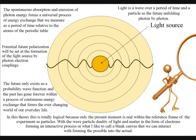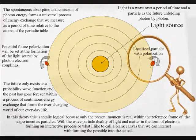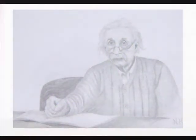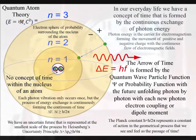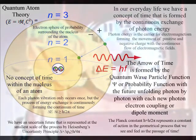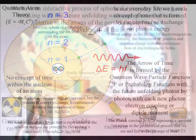This is totally logical because only the present moment is real within the reference frame of the experiment as a particle. With the wave-particle duality of light and matter in the form of electrons forming an interactive process, or what I like to call a blank canvas that we can interact with, forming the possible into the actual. The future only exists as a probability wave function and the past has gone forever within a process of continuous energy exchange that forms the ever-changing world of our everyday life.